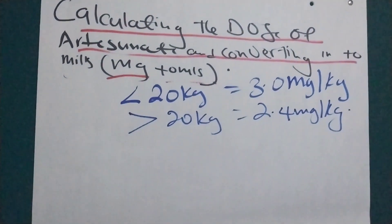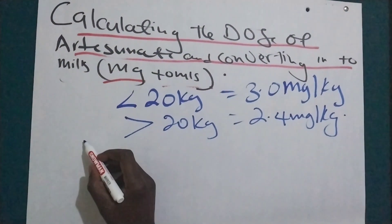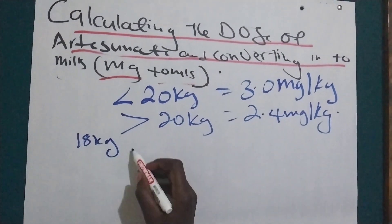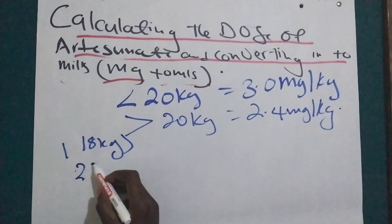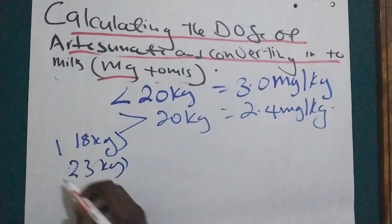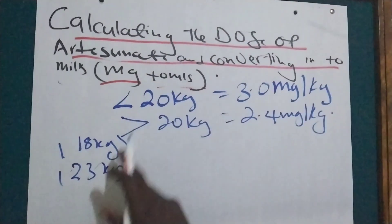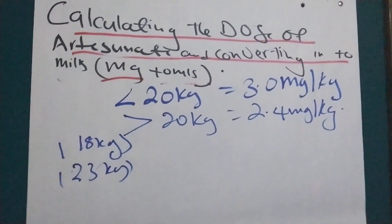Now let's give a scenario. If someone has 18 kilograms and then someone has 23 kilograms. So this one will fall under this and this one will fall under this. So let's start.